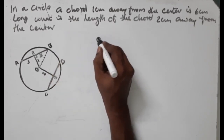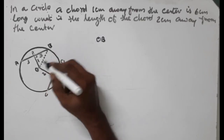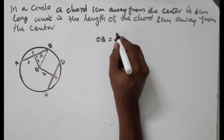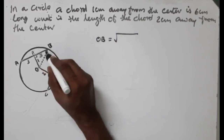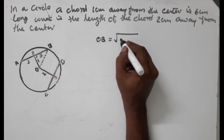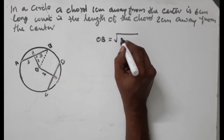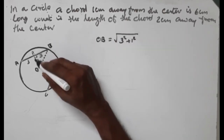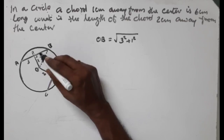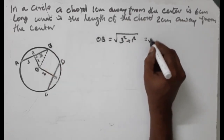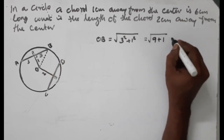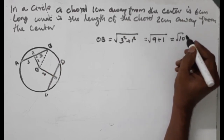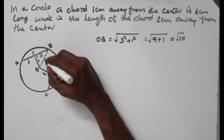This is O, B and E distance. This is the radius. Radius is the root of PB² plus PO². This is 3² plus 1². So 3² is 9 plus 1. This is root 10. This is the radius — root 10.